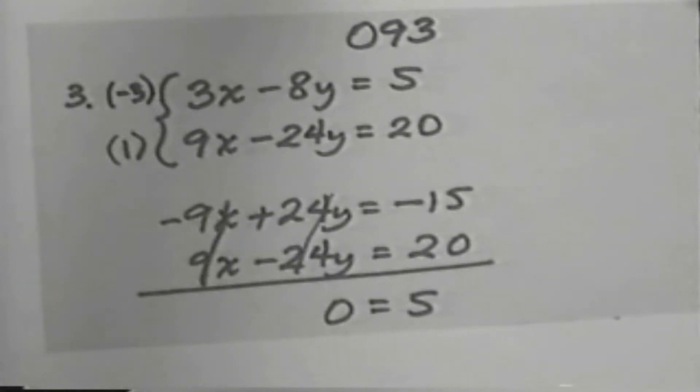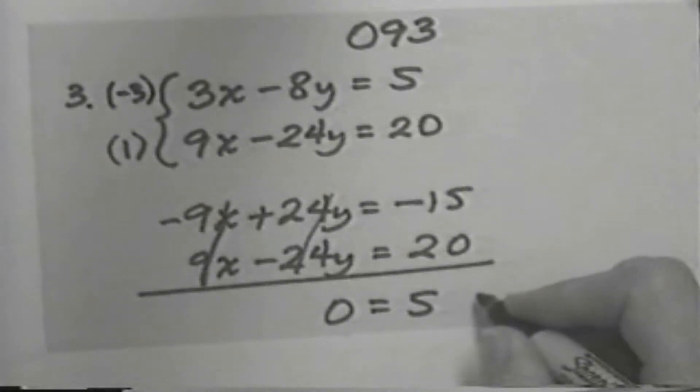Remember from your earlier work that when the variables completely disappear in the algebraic solution method, we saw this in the substitution method, when the variables completely disappear, the numbers that are left make an equation which is true or which is false. This time, 0 equals 5 is false.